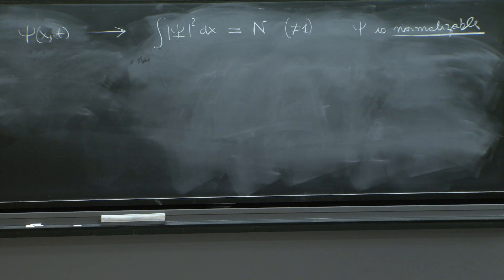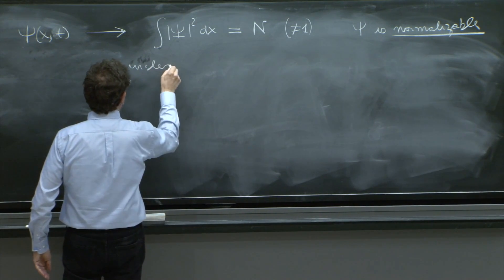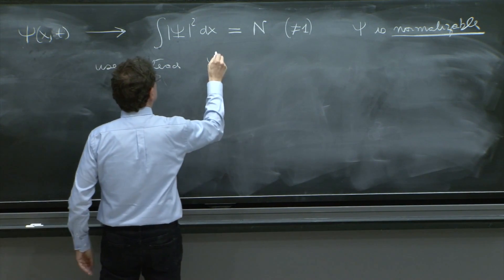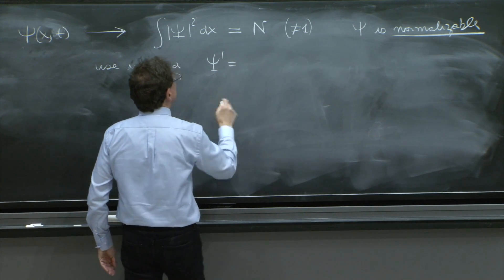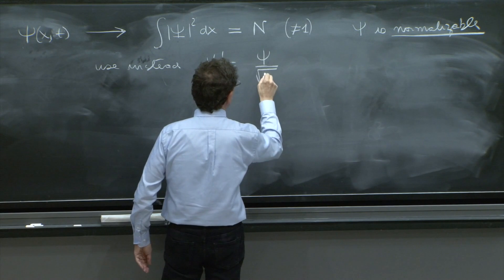And using this idea that changing the coefficient of the function doesn't change it too much, we simply say use instead a psi prime, which is equal to psi over square root of N.